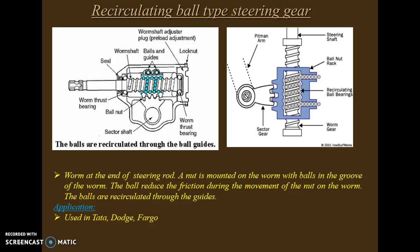The next type is the recirculating ball type steering gear. There is a worm at the end of the steering rod, and a nut is mounted on the worm with balls in the groove of the worm. The balls reduce friction during the movement of the nut on the worm. The balls are recirculated through guides. This type is used in Tata and Fargo vehicles.